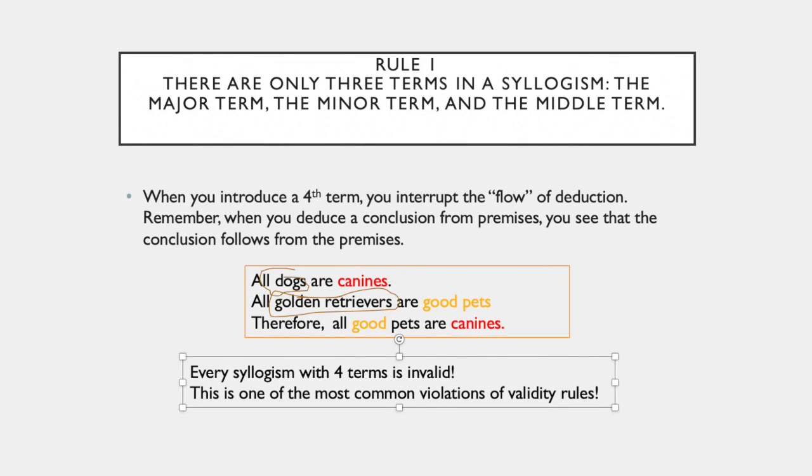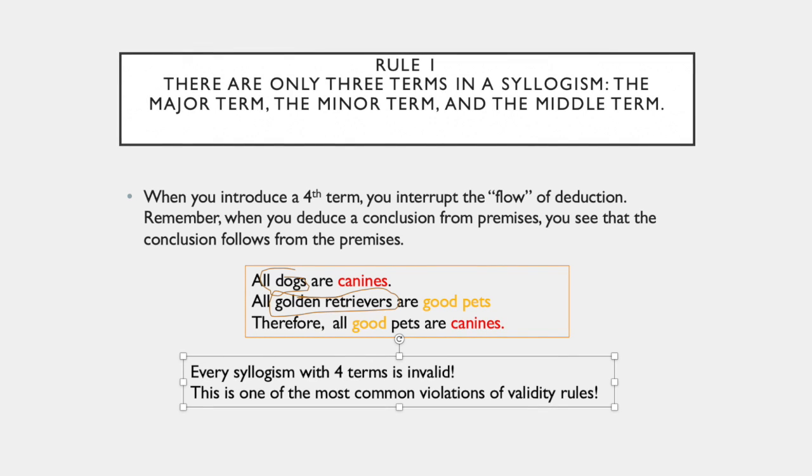So E and O are the negative propositions and A and I are the affirmative propositions. Rule one is there are only three terms in the syllogism: the major term, the minor term, and the middle term.